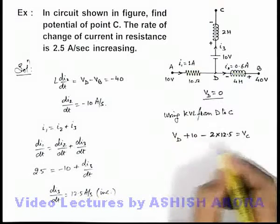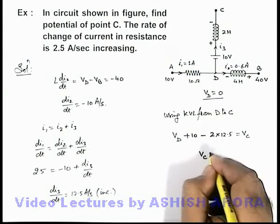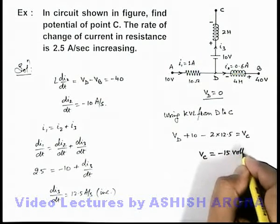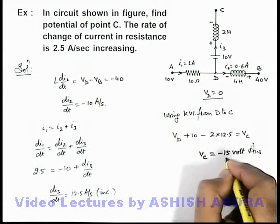The value of V_D we know it is zero. On simplifying we are getting V_C is 10 minus 25, it is minus 15 volt. That will be the answer to this problem.